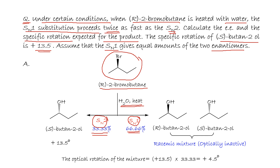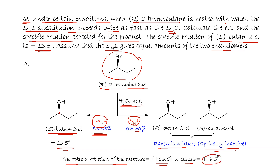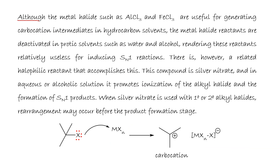The SN1 pathway gives a racemic mixture, which is optically inactive. The optical rotation of the mixture comes entirely from the 33.33% SN2 product. Multiplying the specific rotation by the percent optical activity gives the optical rotation. The enantiomeric excess is 33.33% and the optical rotation is +4.5 degrees.